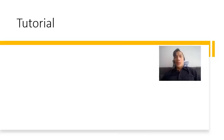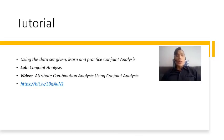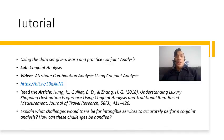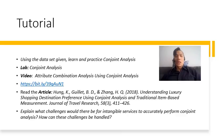For this tutorial, I would like you to explore conjoint analysis using the shoe dataset I've given you, following the technical video I've created on conjoint analysis for attribute combinations. Go through it, play around, and study how to do conjoint analysis. Then read the article 'Understanding Luxury Shopping Destination Preference using Conjoint Analysis,' and explain what challenges there would be for intangible services to accurately perform conjoint analysis, and figure out what tactics can be placed to handle these challenges, especially for intangible products like services.